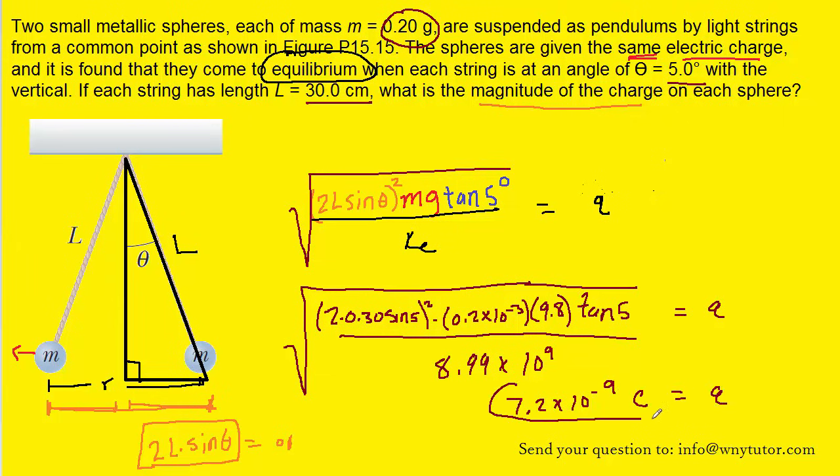If for any reason you need to convert that into nanocoulombs, you could simply multiply your result by 10 to the positive 9, and so that would just give you 7.2 nanocoulombs. So, either answer is acceptable.